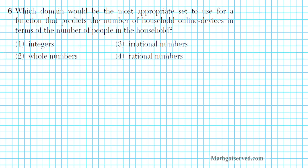For number 6, it reads: which domain will be the most appropriate set to use for a function that predicts the number of household online devices in terms of the number of people in the household? So we're creating a function f of n, where n is the number of people in the household, and the output is the number of online devices.